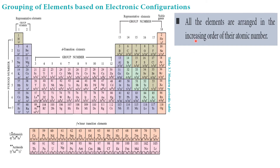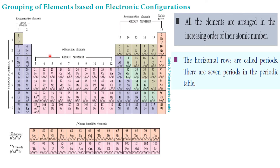All the elements are arranged in the increasing order of atomic number. The horizontal rows are called periods, going left to right. There are a total of seven periods — one, two, three, four, five, six, seven — in the periodic table. These horizontal rows are called periods.